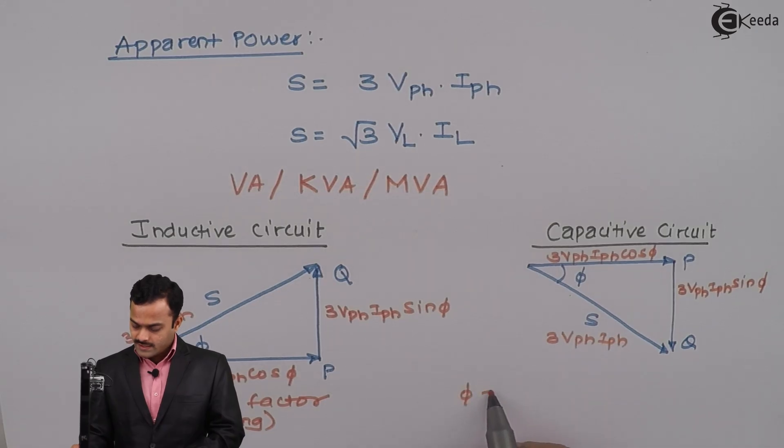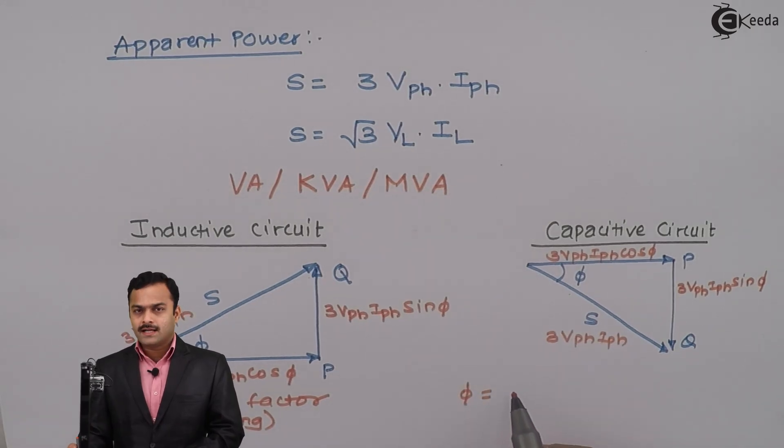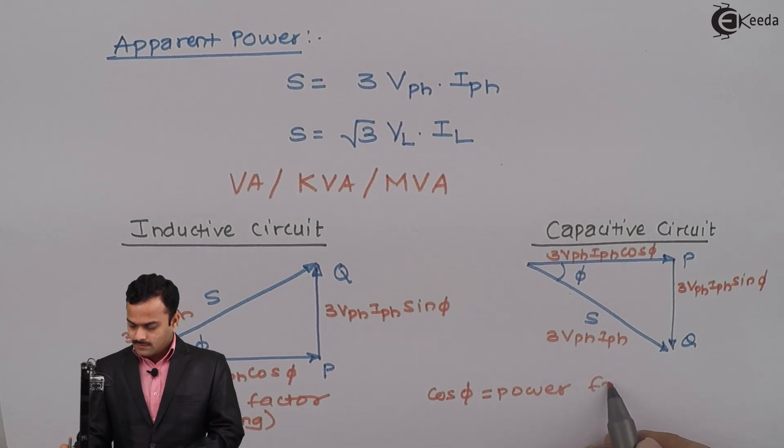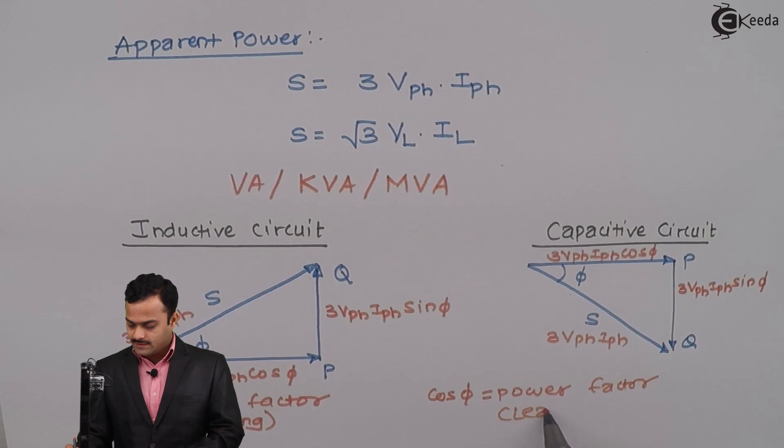φ, once again, a power factor angle or phase angle and cos of it is power factor. It is a capacitive circuit, hence the nature is leading.